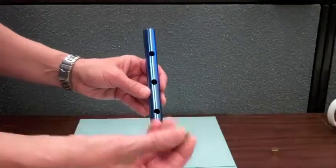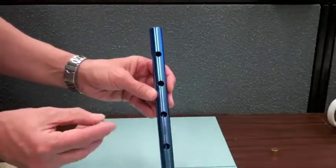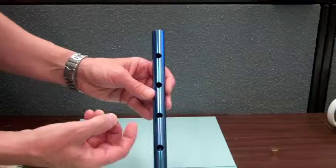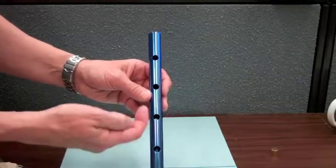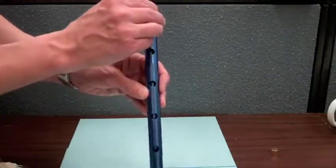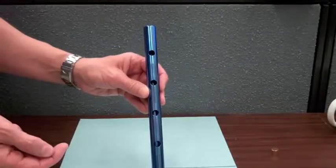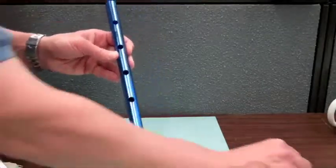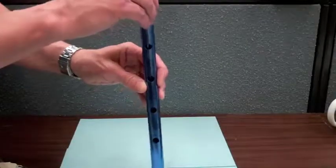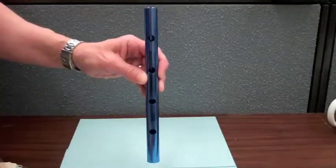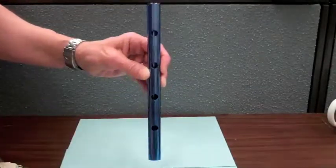That magnetic field is opposing the changing magnetic field due to the slug falling. So the magnetic field from those eddy currents is going to push back on this magnetic slug, and that's why it falls slowly through this aluminum pipe compared to the non-magnetic slug that falls through rapidly.